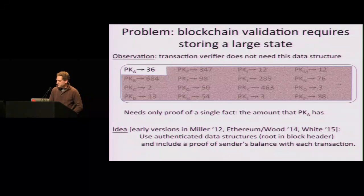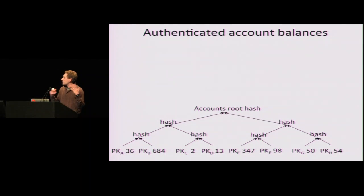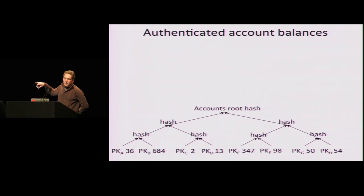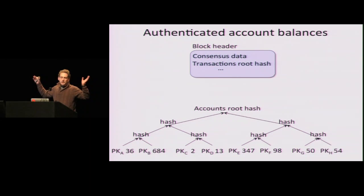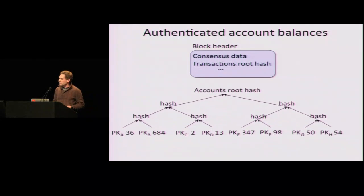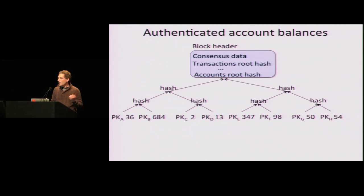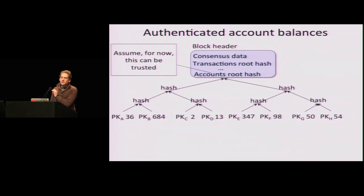So imagine that we just put alphabetically all the public keys at the bottom of a tree, and we hash things pairwise up — that's called a Merkle tree. The very root hash of that thing is the Merkle root, which we put into the block header. For now, assume that this Merkle root can be trusted — I will explain later why. So it is a true indication of who has how much money.